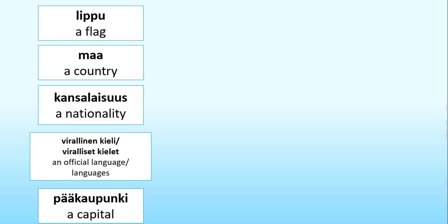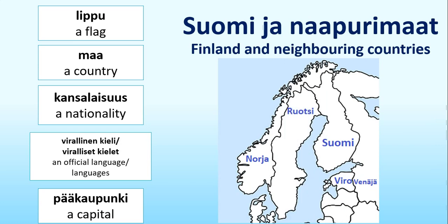I will start off with Finland and the neighboring countries of Finland. So Finland in Finnish is Suomi, and neighboring countries is naapurimaat — naapuri is a neighbor and maat is countries. From the map here you can see that Finland has four neighboring countries: Ruotsi (Sweden), Norja (Norway), Venäjä (Russia), and Viro (Estonia).